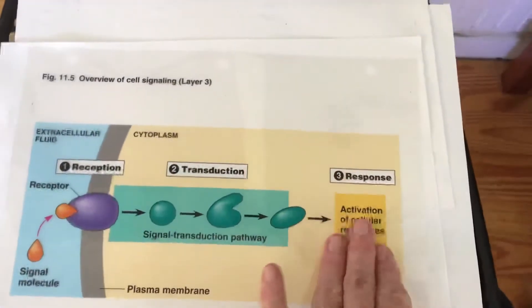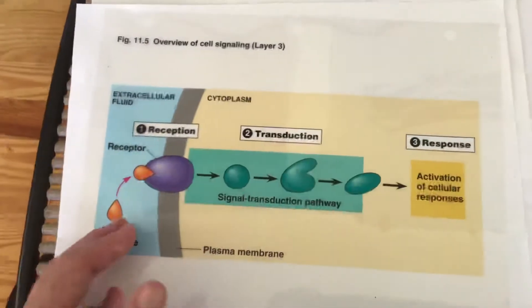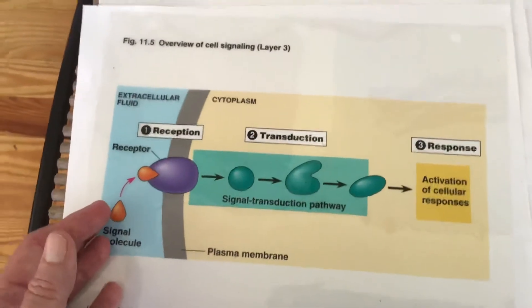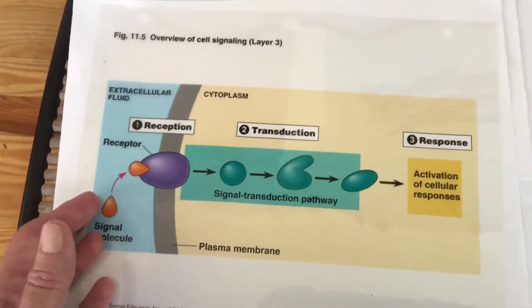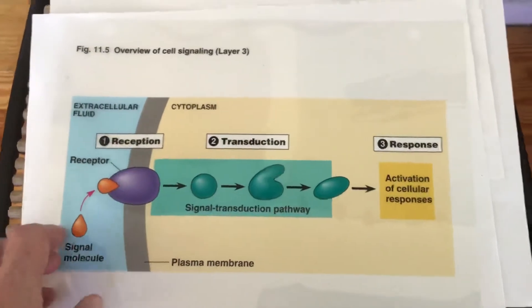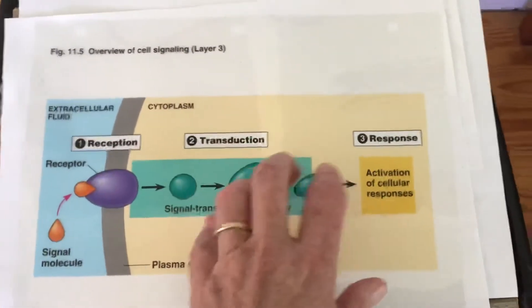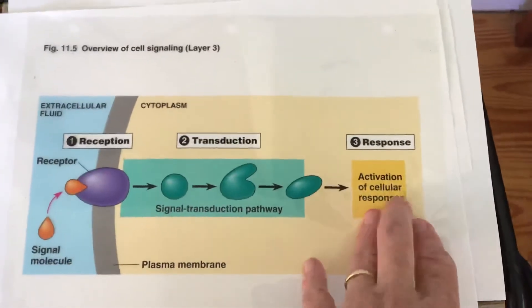So say for example I have a hormone that is trying to say they want you to do cell division or something like that. So I have a hormone that's going to set up the signal transduction pathway and then that's going to create the start of a cell division process.